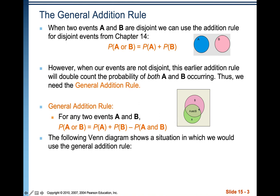So we do the probability of A plus the probability of B — we've added this part twice, so we subtract it off. We could use this formula for disjoint events too, because the probability of A and B is 0, so you'd end up with probability of A plus probability of B. If you want to memorize just one formula, the general rule is the way to go.